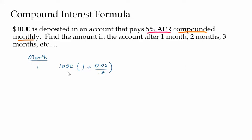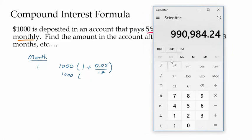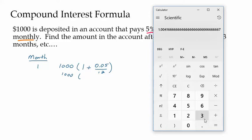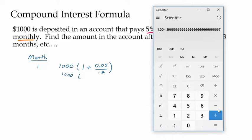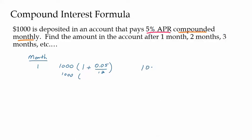Let's punch this into our calculator. A word of caution: if you do the part in the parentheses first, you get a lot of decimals — you don't want to round this. Keep all these decimals. Instead of writing this number down, rounding it, and then multiplying by a thousand, just do the entire computation and multiply by a thousand, then write your number down. Rounding to the nearest penny, we've got $1,004.17. That's our balance after month number one.